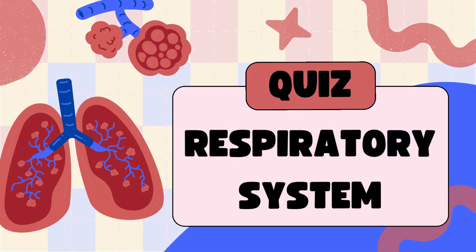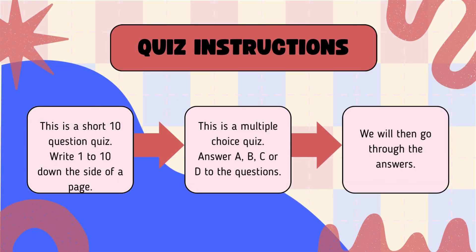Let us have an assessment of what we have learned so far under the respiratory system. This quiz is a short 10-question quiz, so write 1 to 10 on the margin of your notebook where you are going to write your answers. It is a multiple-choice quiz, therefore you have options A to D for each question. We will then go through the answers later.